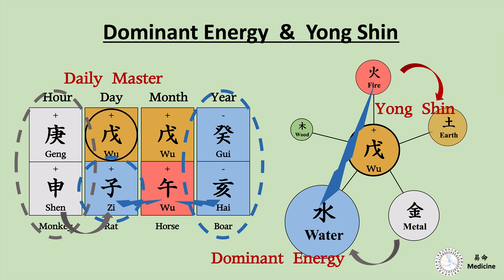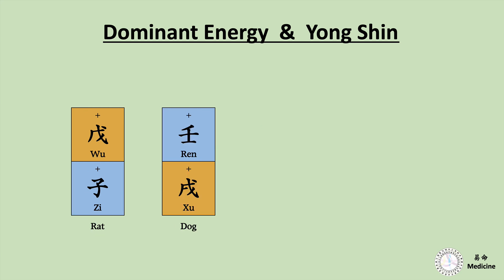Some people might ask: these Earth can control water here and here. That is really true, so we always need to figure out the relativity between the elements that support the Daily Master and other elements that drain the Daily Master's energy. Also, the influence from heavenly stem to earthly branch and from earthly branch to heavenly stem is a little different. If we see these two structures, both have the structure of Earth controls water. But if we say this Earth can control this water 100%, this Earth can control this water only about 50 to 60%.